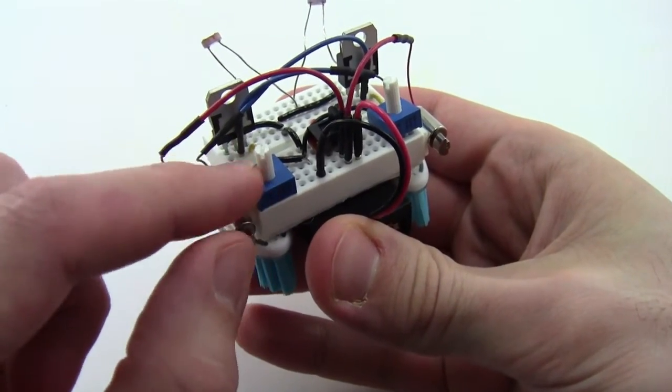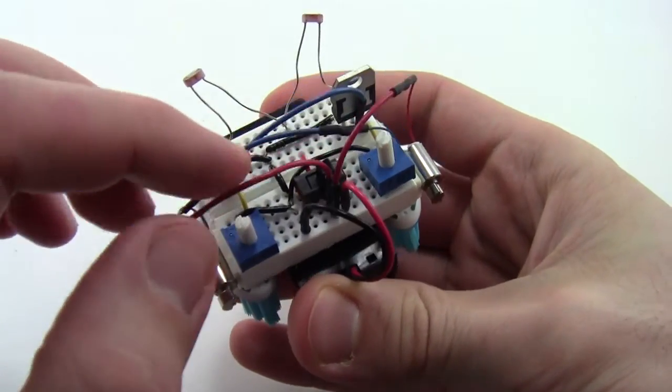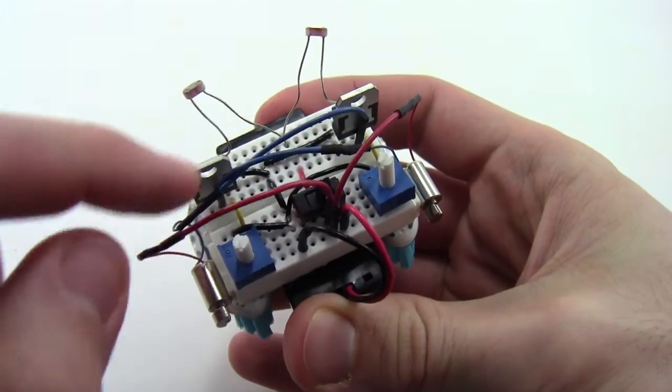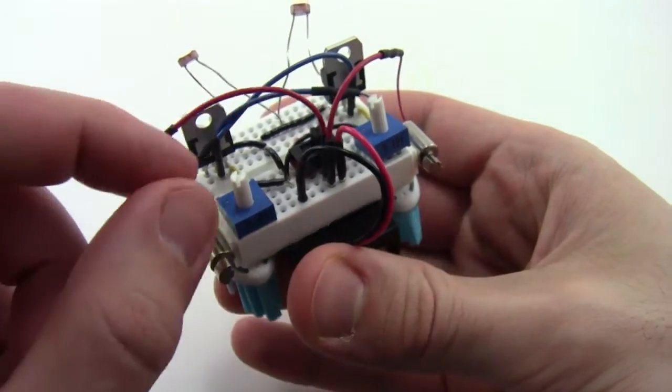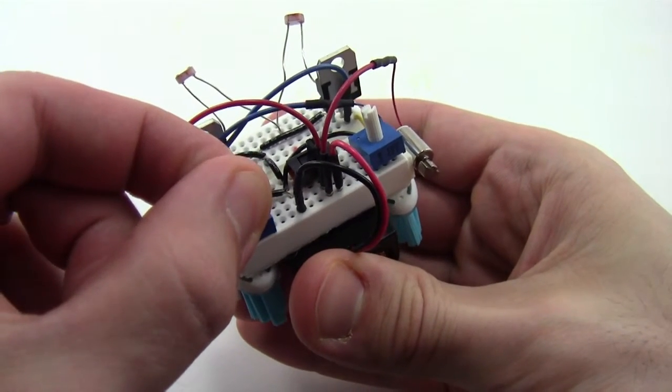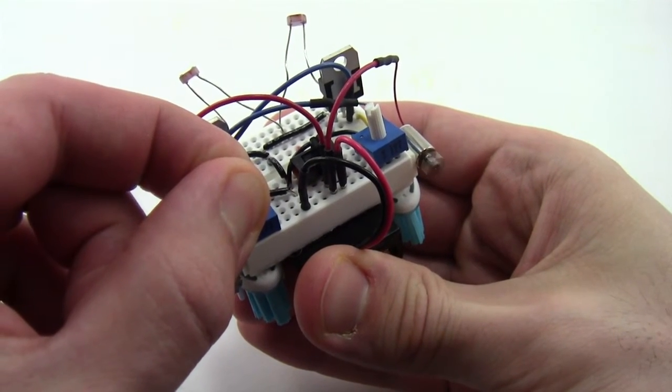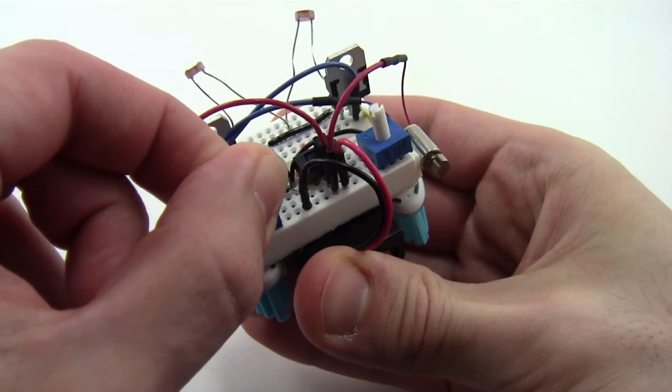So I'm going to turn this potentiometer. Notice how, if you notice, the blue motor wires are crisscrossed across the robot. So the potentiometer controls the motor on the other side. I'm going to turn that up. And that motor starts to spin.